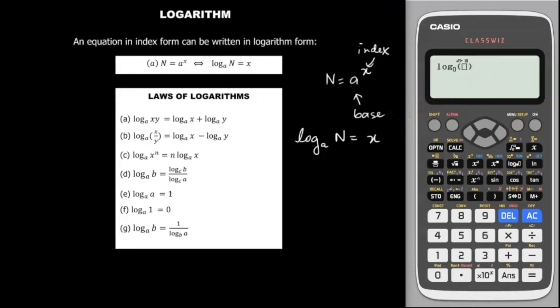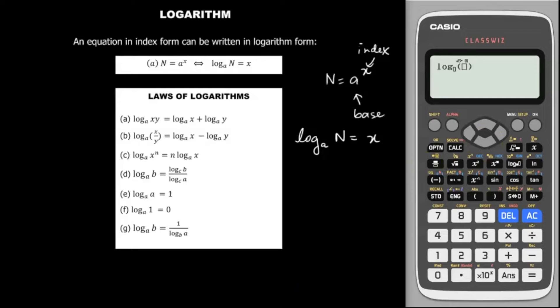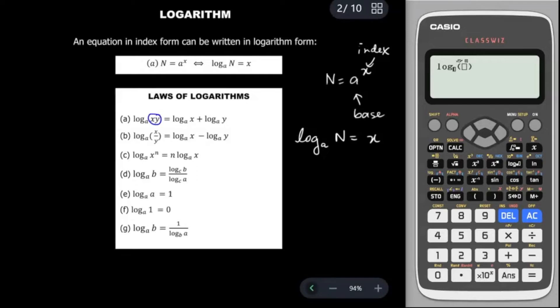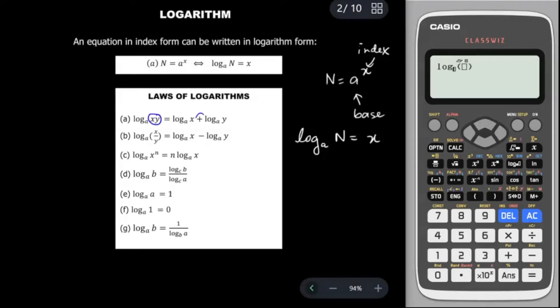Let's look at the laws of logarithm. For law (a): log base a of xy equals log base a of x plus log base a of y — so multiplication splits into addition. For law (b): log base a of (x/y) equals log base a of x minus log base a of y — so division becomes subtraction.